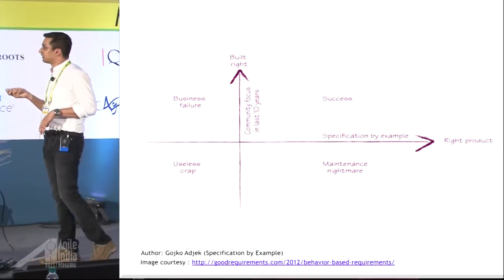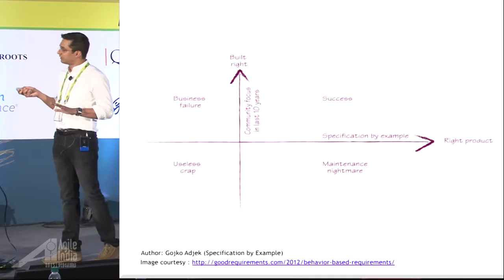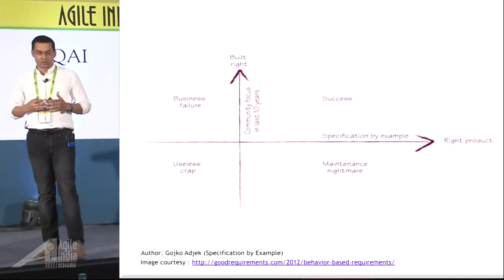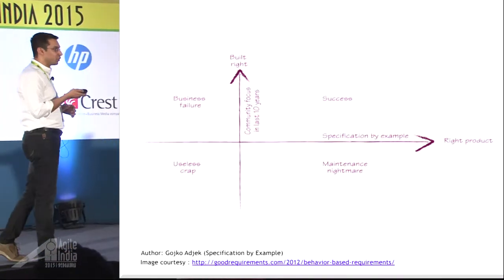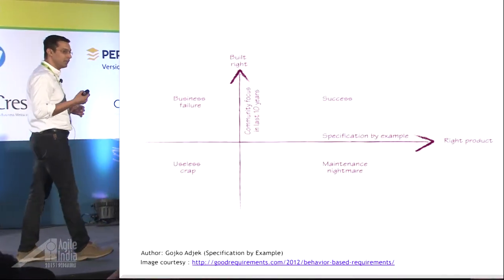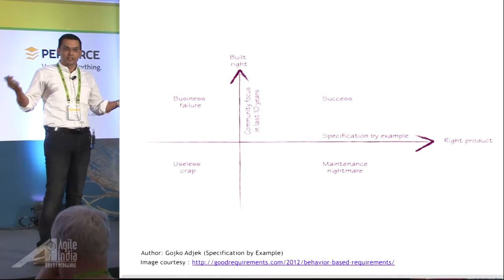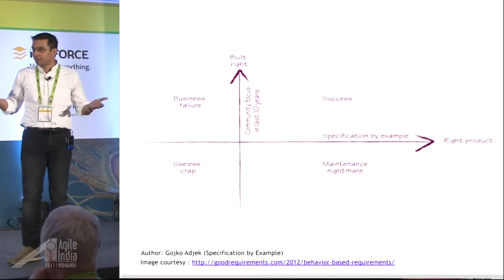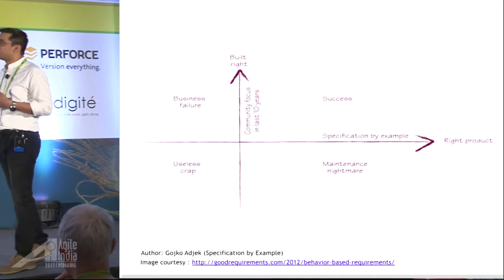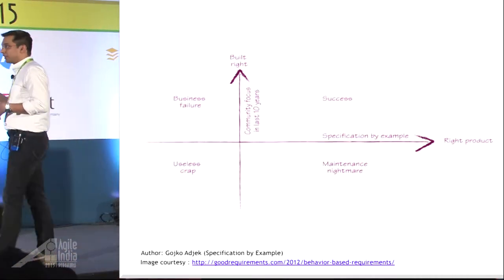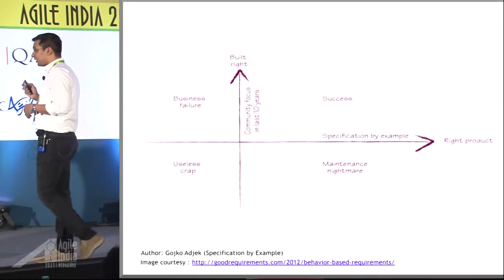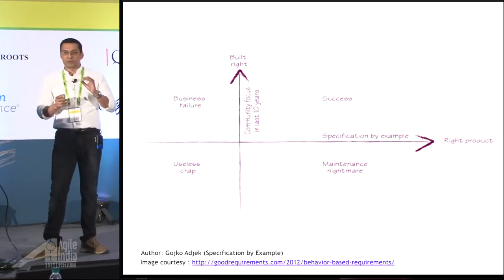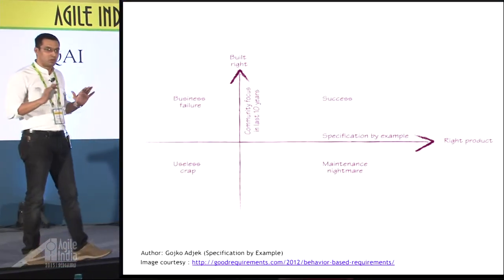Another interesting quadrant is where my product is right and solves the business demand, but I have badly compromised on quality. What will happen? It's going to give me sleepless nights. The reason being, this product is going to get used by the users — users have paid for it — and they're certainly going to come back and it's going to bite me very badly, creating a lot of nuisance. So the simple mantra for success is: build the right product rightly, period. Nothing more, nothing less. You cannot compromise on either of these.